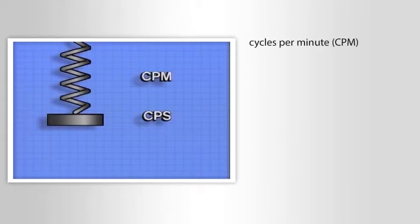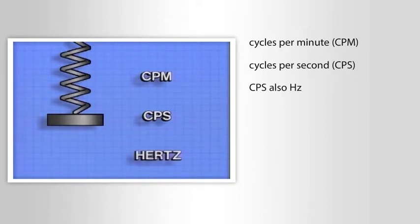Frequency can be measured in cycles per minute, CPM, or in cycles per second, CPS. CPS is simply CPM divided by 60. CPS can also be expressed as hertz.